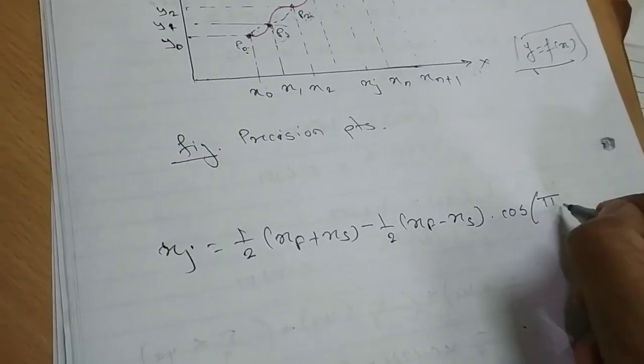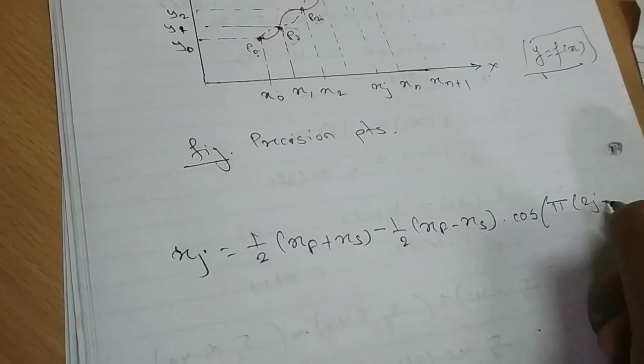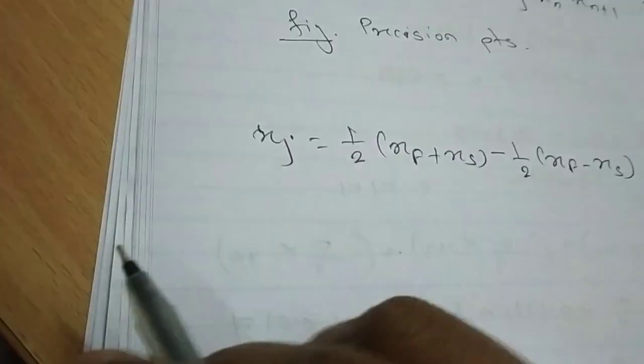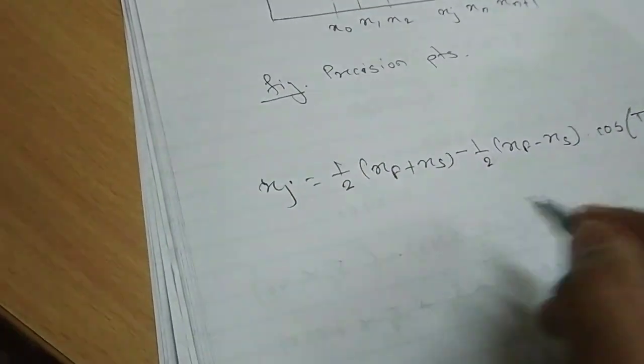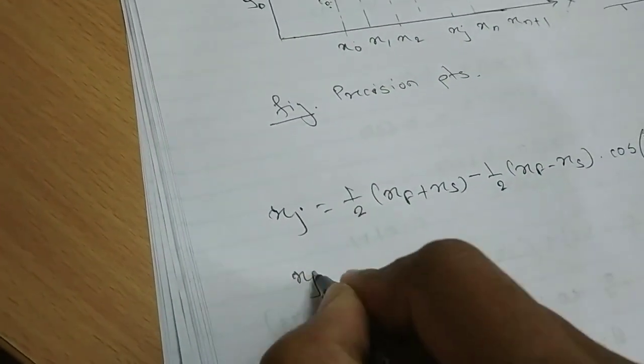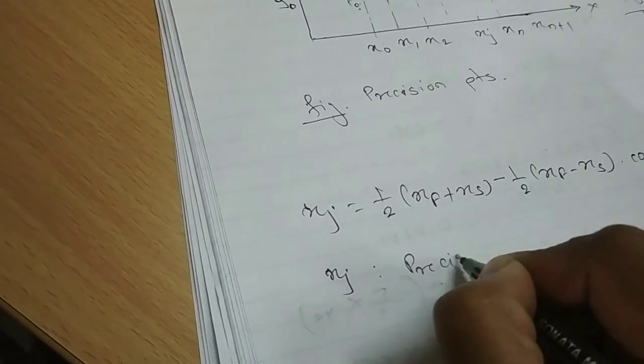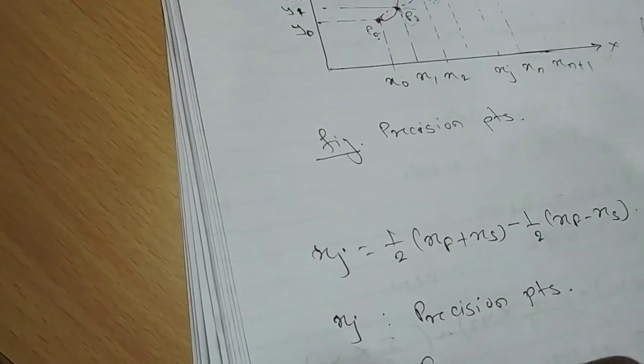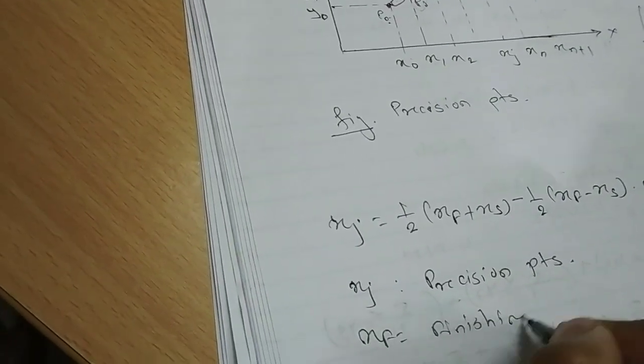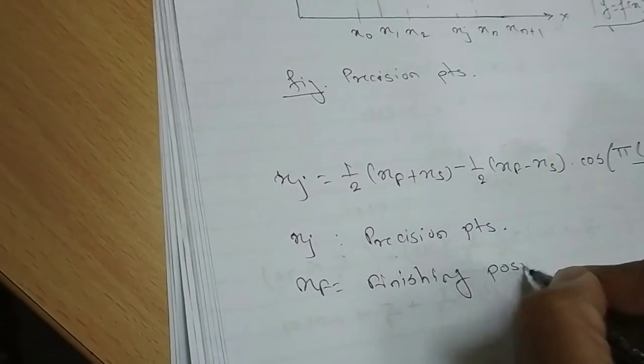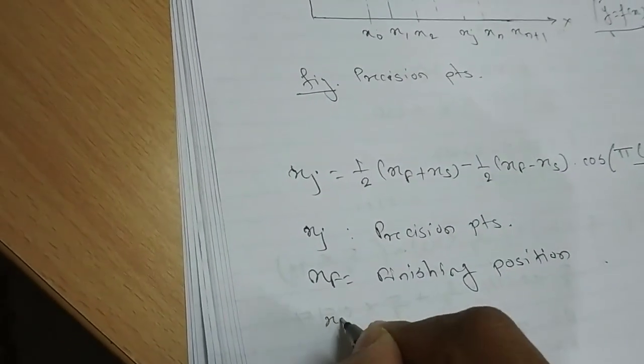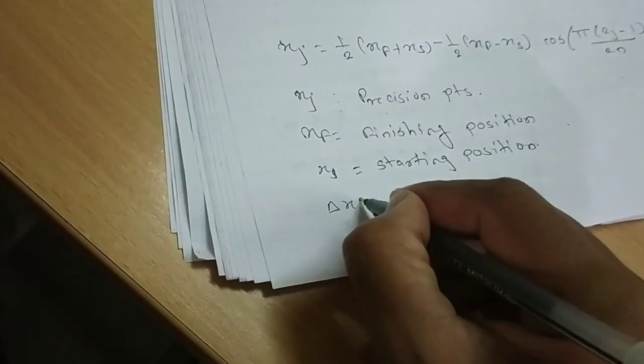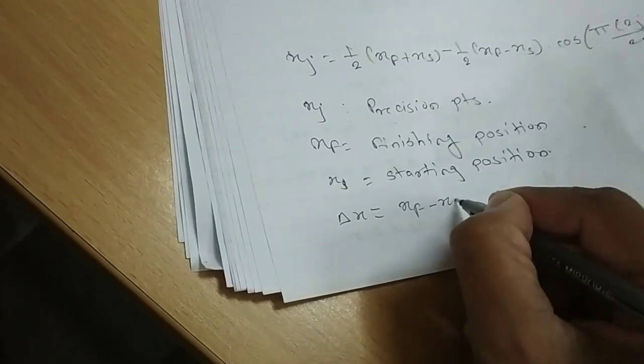xj is equal to one half (xf plus xs) minus one half (xf minus xs) into cos of (pi(2j minus 1) divided by 2n). So, let me explain what is the term xj and so on. Where xj is precision points. xf is the finishing position, that is final position of x. Then xs is the starting position.